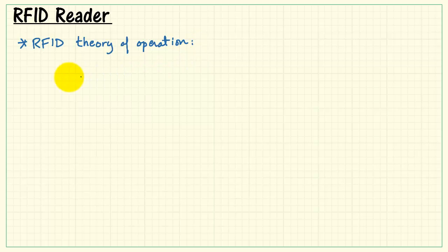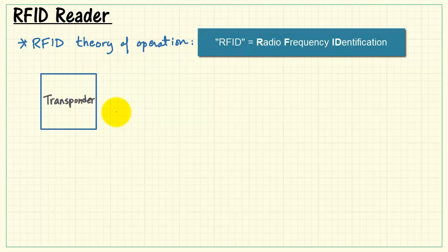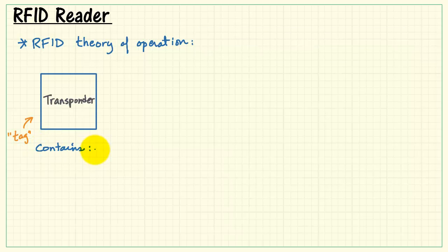With those two structures in mind, let's take a look at the underlying theory of RFID. Now, the transponder, probably more commonly known as the TAG or RFID TAG, contains the antenna that we just saw, that loop antenna.